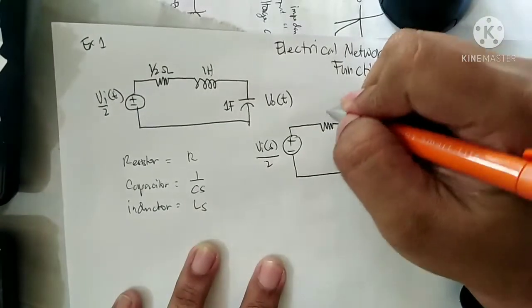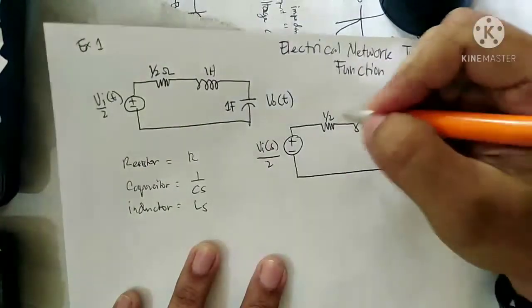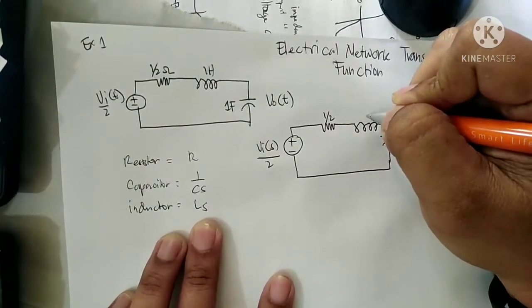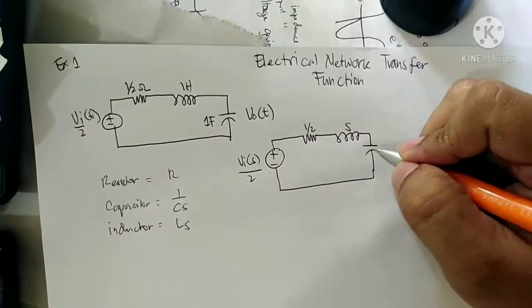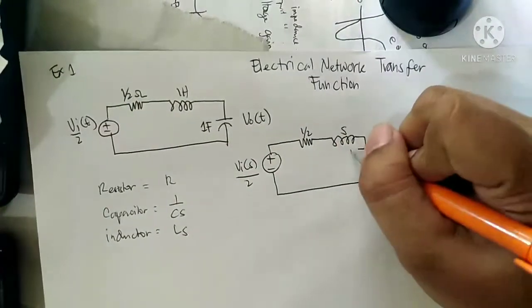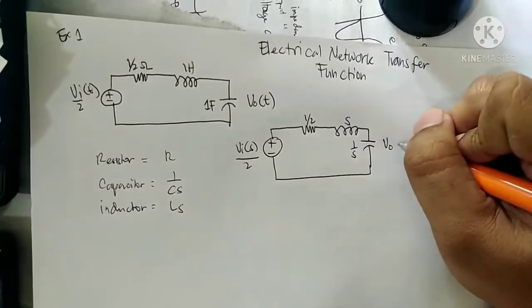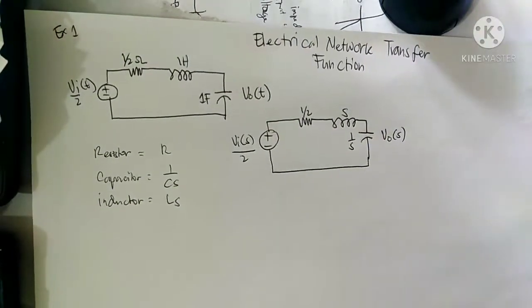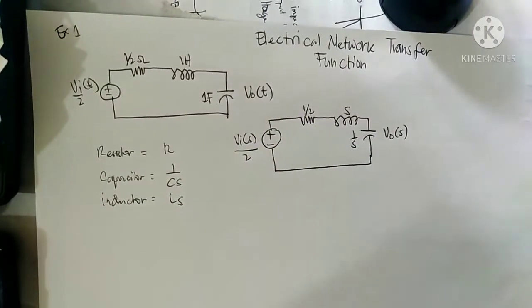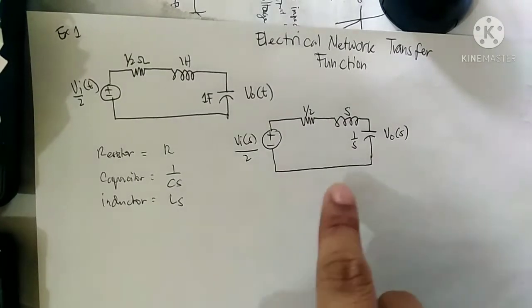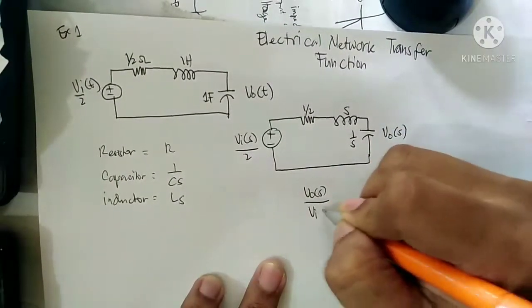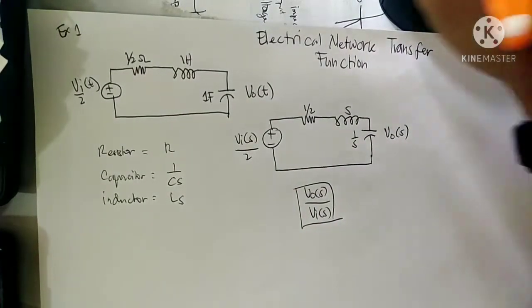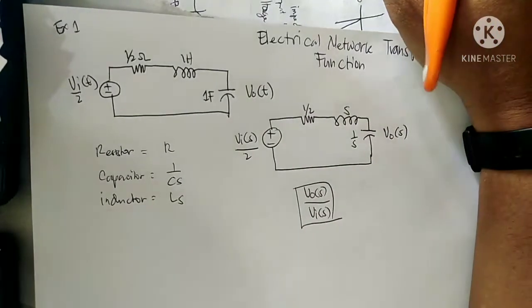In the S-domain, Vi(S) is over 2, and this one-half equals R. The inductor — since the inductance is 1, it becomes S. The capacitor — since it is 1 farad, it becomes 1 over S. The output is Vo as a function of S. All parameters are transferred into the S-domain. We're going to calculate the transfer function Po(S) over Pi(S), which is the ratio — the gain of the transfer function.